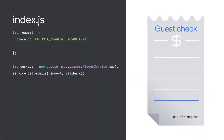If you don't specify fields in the Place Details request, all data charges are triggered — like ordering a pizza with everything on it. If you just want plain cheese pizza, why pay for the combo?